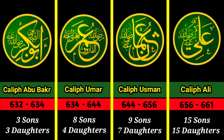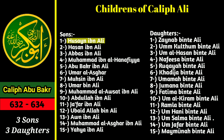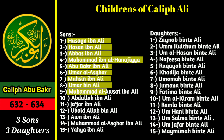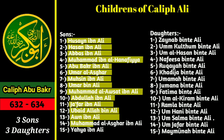His sons' names are: Hussein ibn Ali, Hassan ibn Ali, Abbas ibn Ali, Muhammad ibn al-Hanafiya, Abu Bakr ibn Ali, Umar al-Ashgar, Musan ibn Ali, Umar bin Ali, Muhammad al-Assad ibn Ali, Abdullah ibn Ali, Jafar ibn Ali, Ubaid Allah bin Ali, An ibn Ali, Muhammad al-Ashgar ibn Ali, and Yahya ibn Ali.